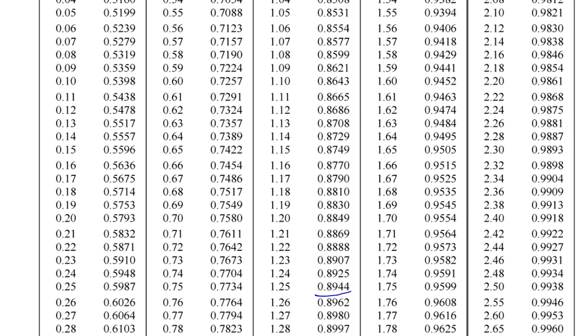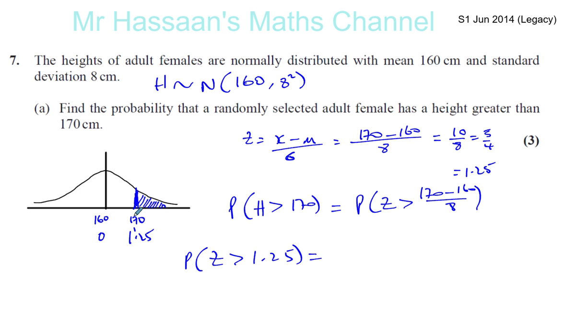Okay, so if I go to 1.25, the table will tell me the area to the left of 1.25. Okay, so what I want to do is I want to find the area to the right of it, which is the total area, the total probability is 1. So what I want to do is 1 minus the probability that Z is less than 1.25.